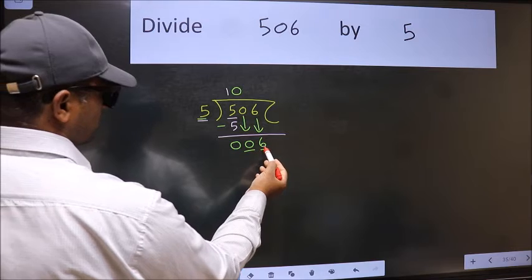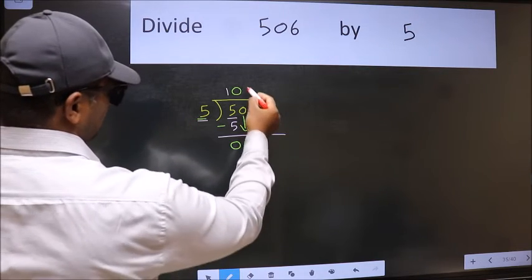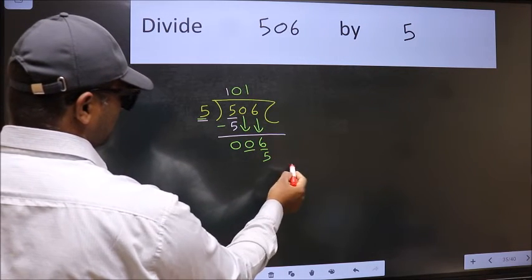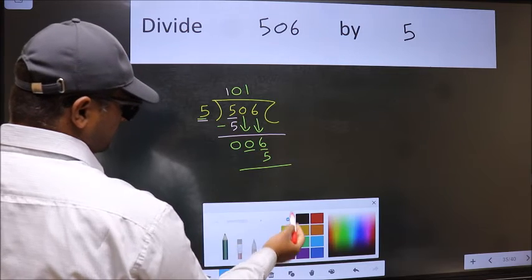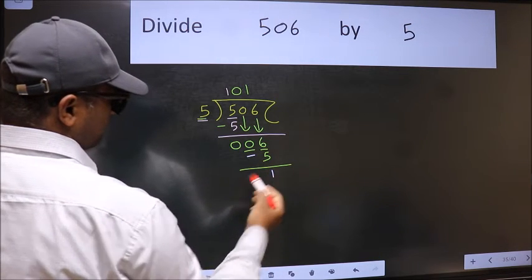Now 6. A number close to 6 in 5 table is 5 once 5. Now we should subtract. We get 1.